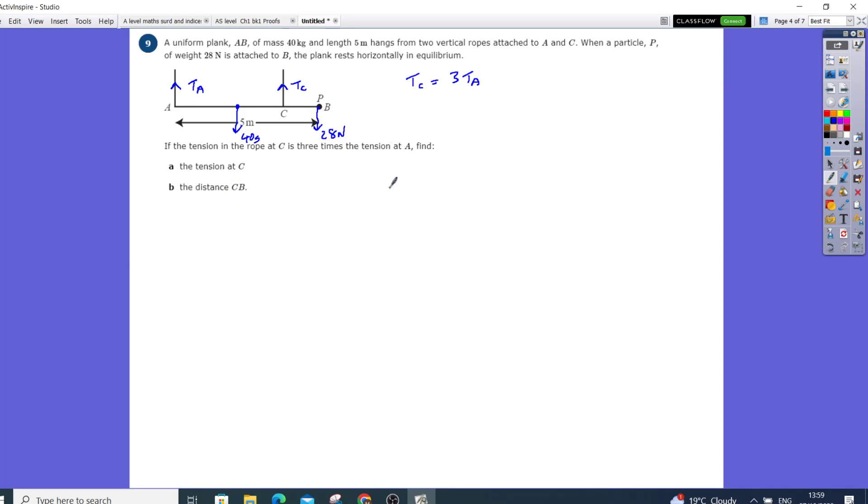So first of all, let's do things vertically, so in the y direction. What you got is you got TA plus TC, these are going up, which is minus 40g plus 28 newtons. Now I know that TC is 3TA, so that's going to give me TA plus 3TA, and that's going to be 40 multiplied by 9.8, which is going to give me 392 newtons plus the 28.